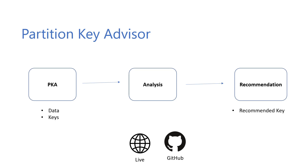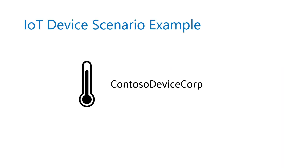The Partition Key Advisor is an open source web application that will help you choose the right partition key by providing a comprehensive analysis of your existing data in Cosmos DB and recommends the best partition keys based on high cardinality of values, throughput, and storage distribution uniformity. There are currently two versions of this project: one being a live application deployed on Azure, and the other is a GitHub project where you can download the source code and add additional features. The Partition Key Advisor has potential for various use cases. Today, we'll be addressing the IoT device streaming scenario for write-heavy workloads.